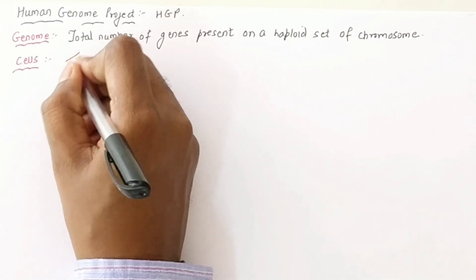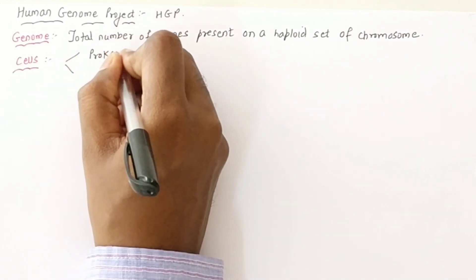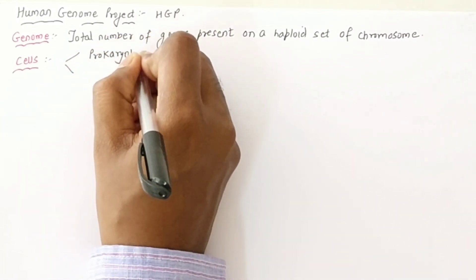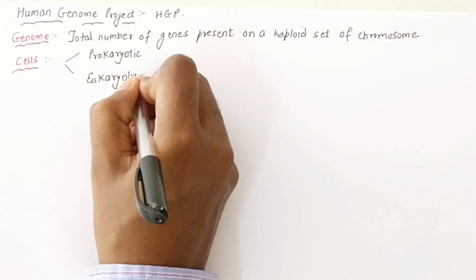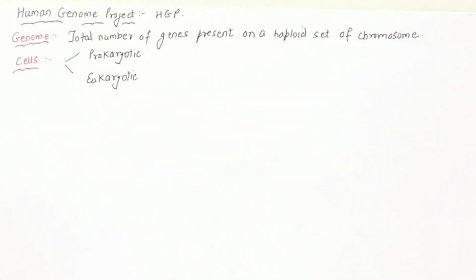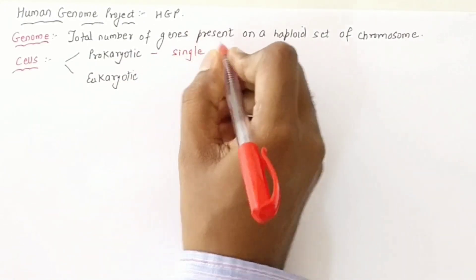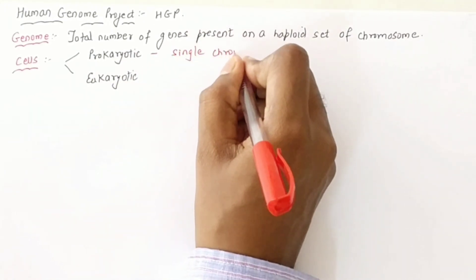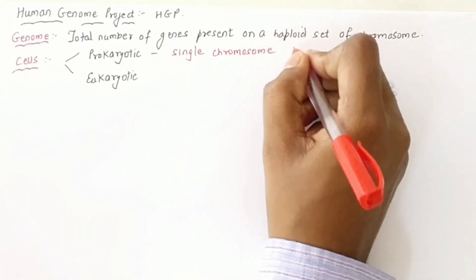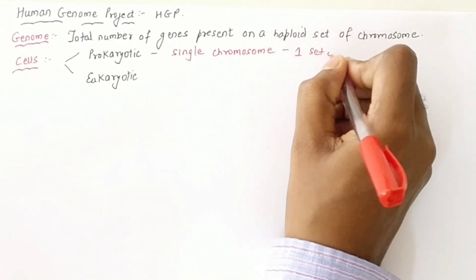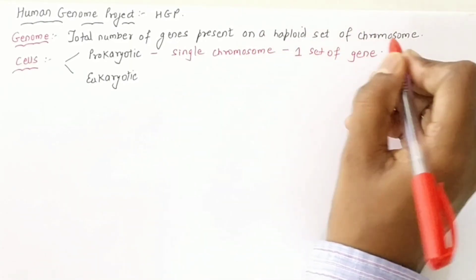When you talk about cells, there are two types: prokaryotic cells and eukaryotic cells. In prokaryotic cells, there is only one DNA — a single chromosome or single DNA — representing one set of genes.